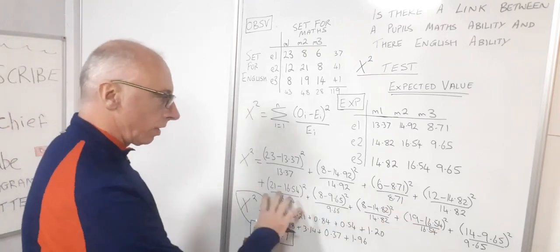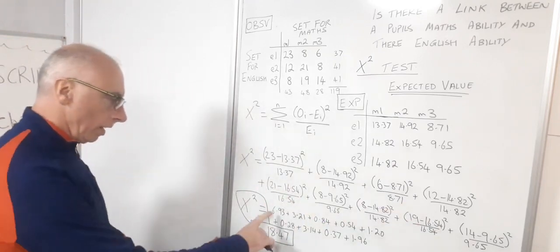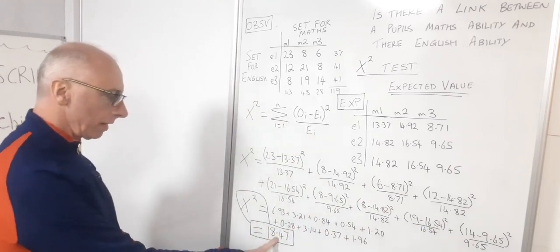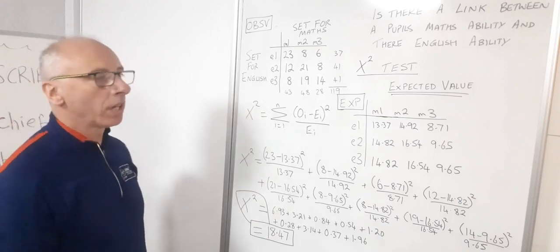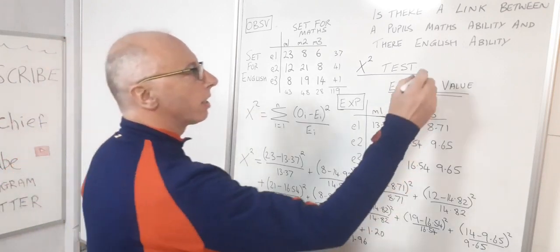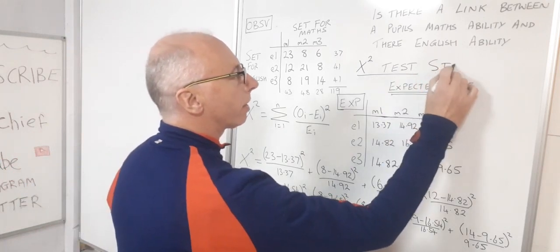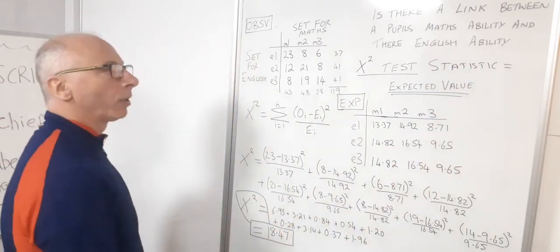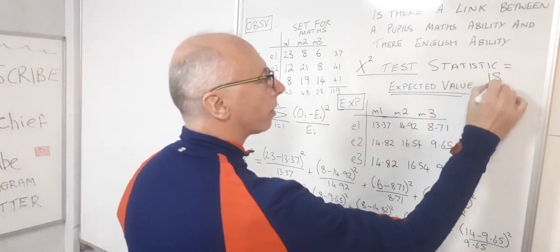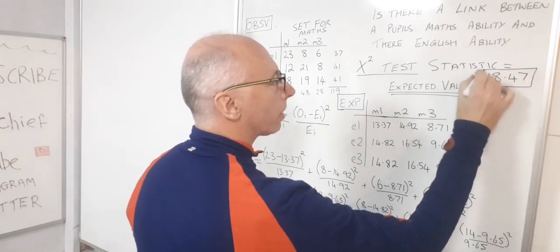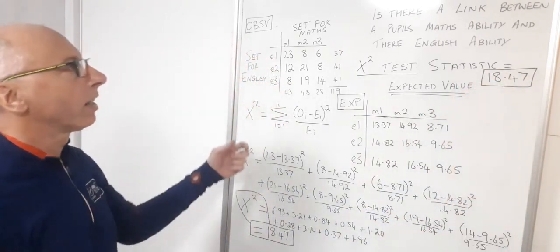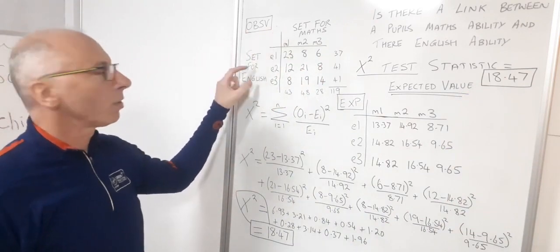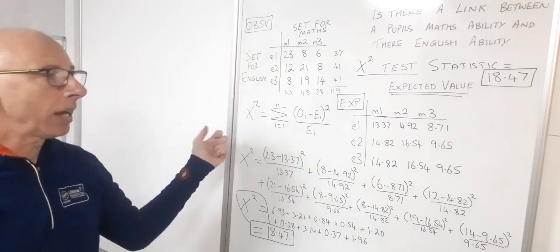I've plugged all these values into the calculator and my chi-squared test statistic is 18.47, allowing for rounding error. So chi-squared test statistic equals 18.47. We'll keep that and then see if there's any correlation or link between the pupils' maths sets and English sets.